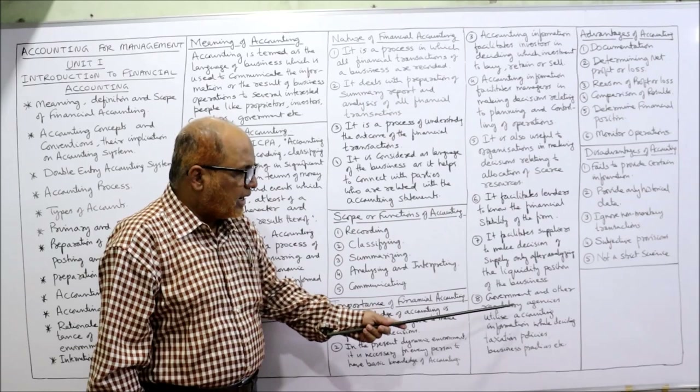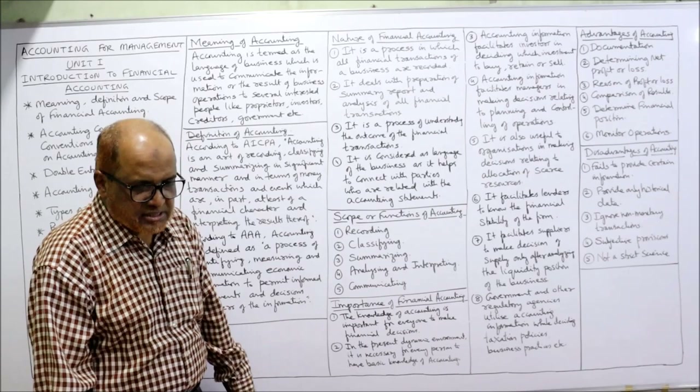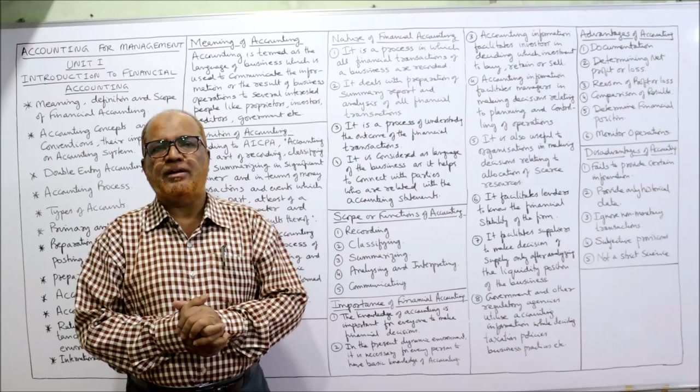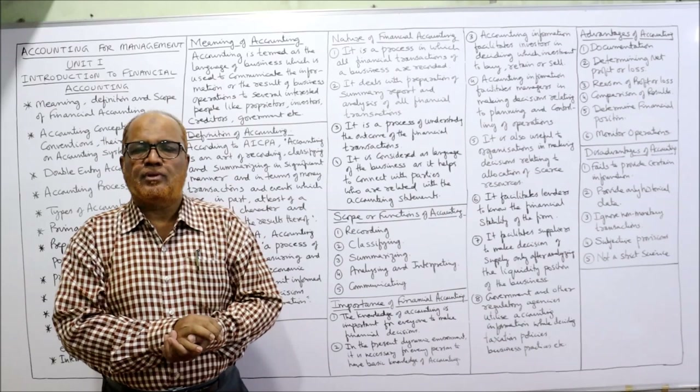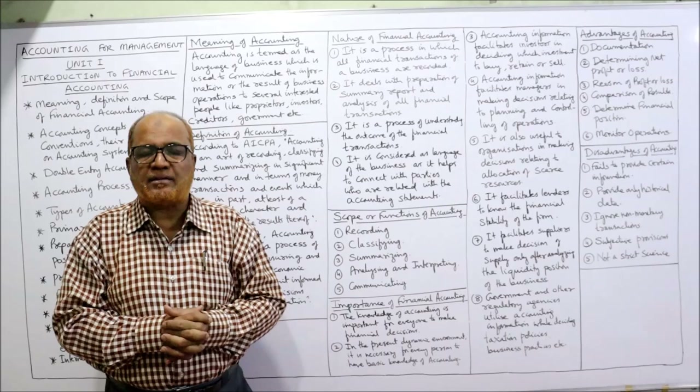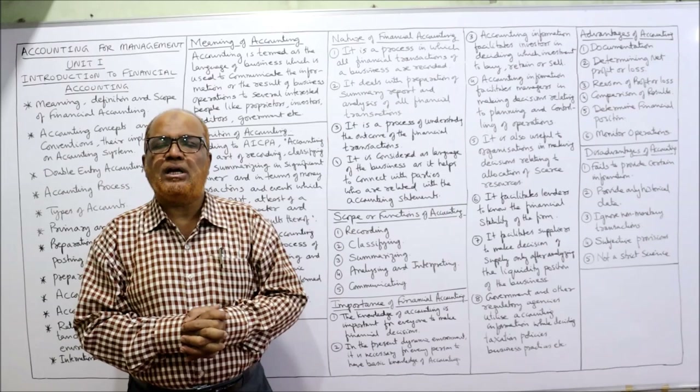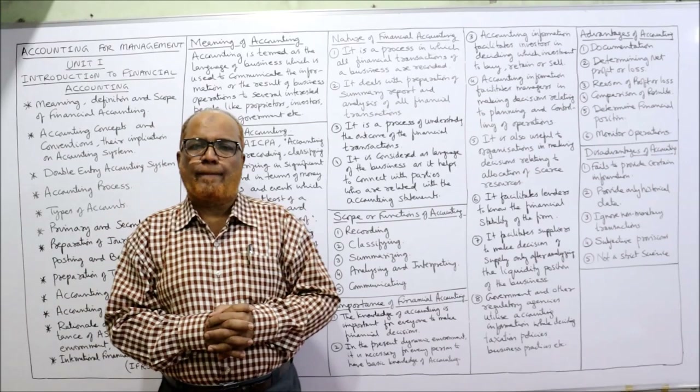Seventh, it facilitates suppliers in making decisions only after analyzing the liquidity position of the business. A supplier wants to ensure their money is safe before supplying material — if the liquidity position is not good, no supplier will come forward. Accounting helps check liquidity. Government and regulatory agencies also utilize accounting information when deciding taxation policies and business practices.